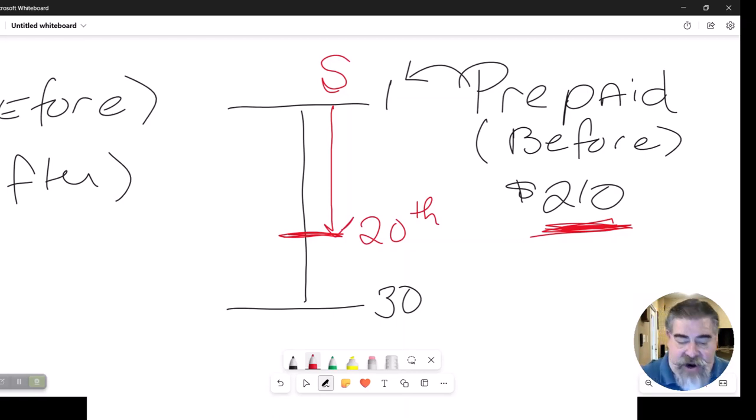The buyer, who is going to be the new owner, used it 10 of those days. So he has to pay the seller some money because the seller needs to get reimbursed for the number of days. This is the buyer side of this chart. So the buyer is going to credit the seller 10 days of this, which is how much? $70.